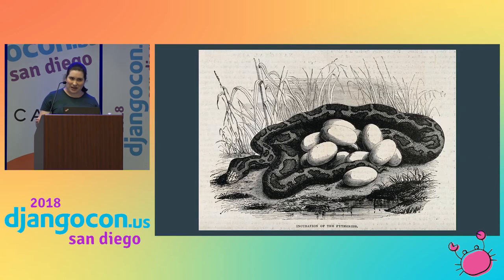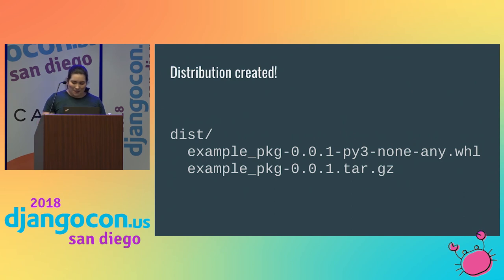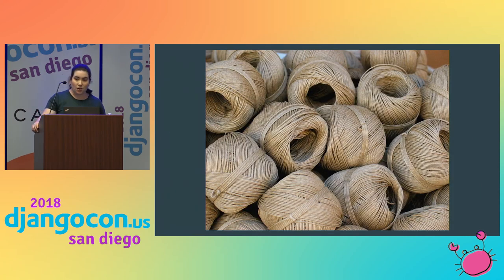Why are they called eggs? Because pythons lay eggs. So finally, we're ready to create the distribution. Before creating your package, make sure you have the latest versions of setuptools and wheel, and then you can create your source distribution and built distribution all in one shot. Twine is a tool for uploading files to PyPI, named for tying up packages with twine to include them in the warehouse. It's a good idea to use Twine instead of setup.py upload because it uploads over HTTPS by default.